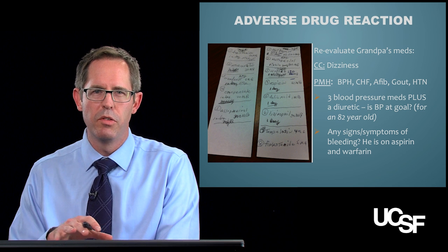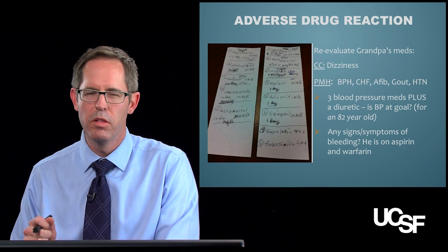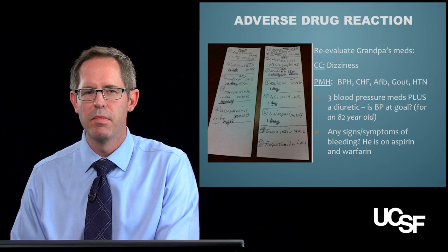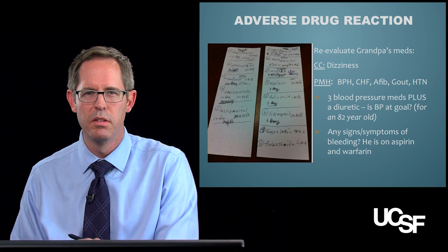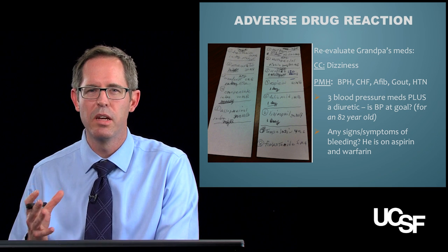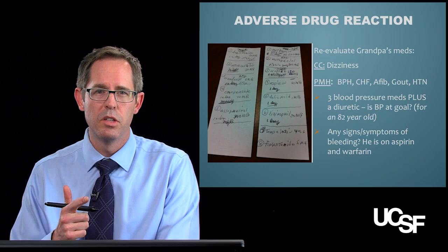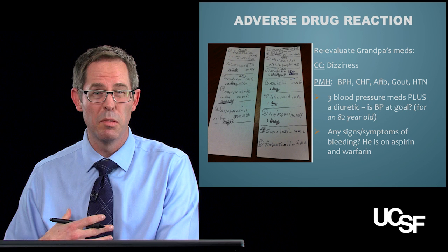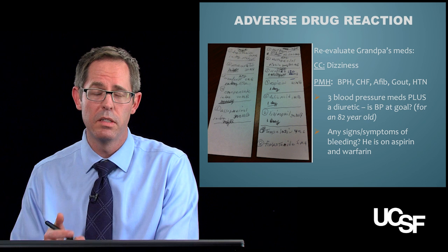Let's bring this back to grandpa. Remember, he came in with dizziness. He has BPH, heart failure, AFib, gout, and hypertension, and he's on three blood pressure medications and a diuretic. We learned in module one that all of those may not be very easy for grandpa's body to handle. So you have to think: is his blood pressure at goal for an 82-year-old? And if not, can you attribute that to one of these medications? Another consideration is that he's on two medications that might cause bleeding — warfarin and aspirin. Is he bleeding? Is he losing blood and developing hypovolemia that he's not compensating well for? Those are two things to consider given this complicated medication list.